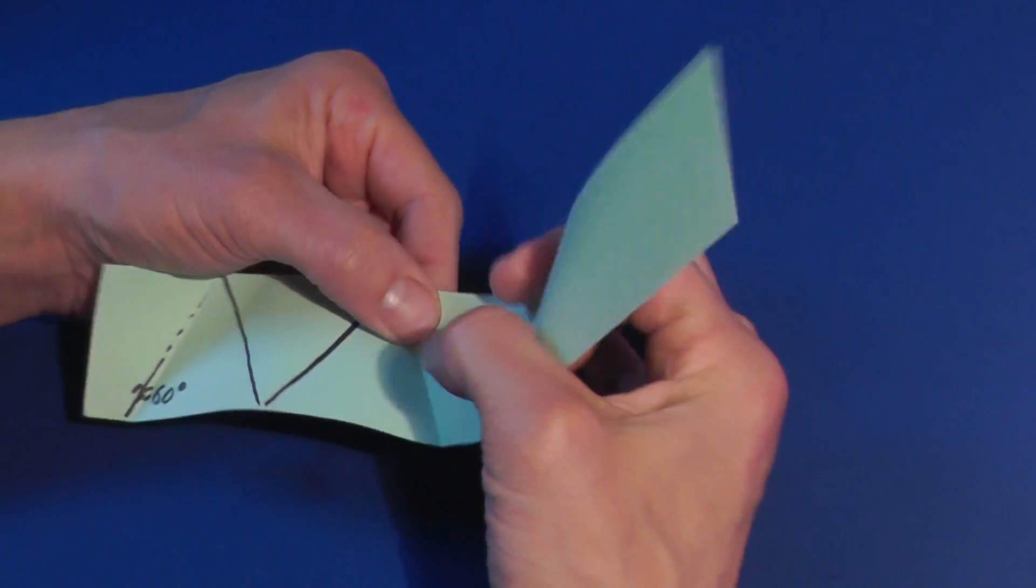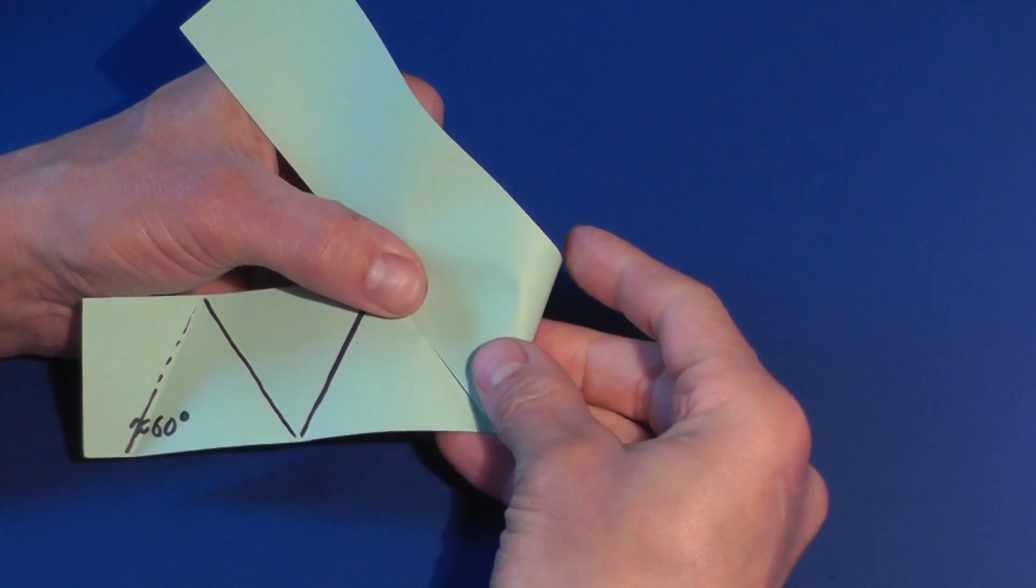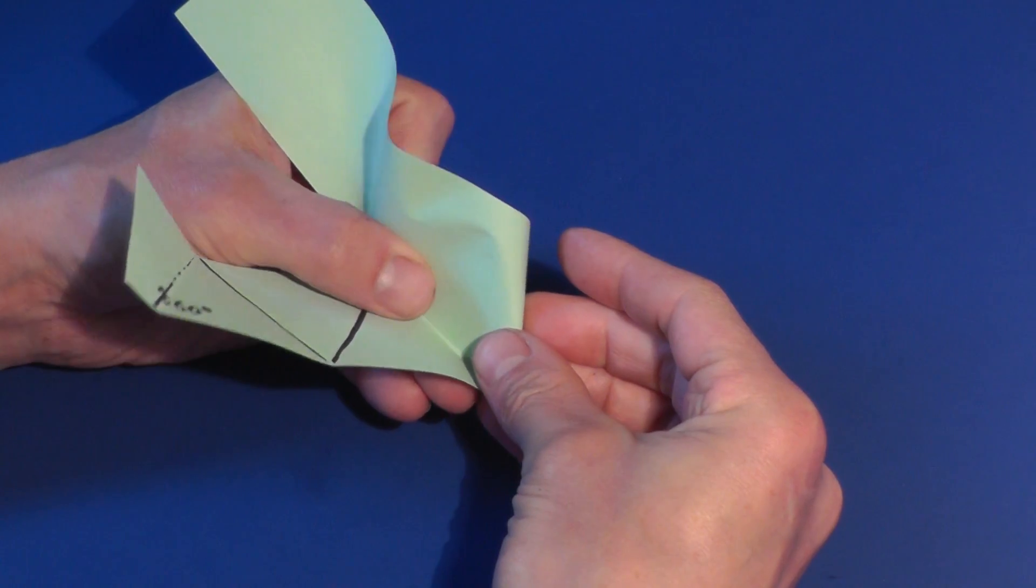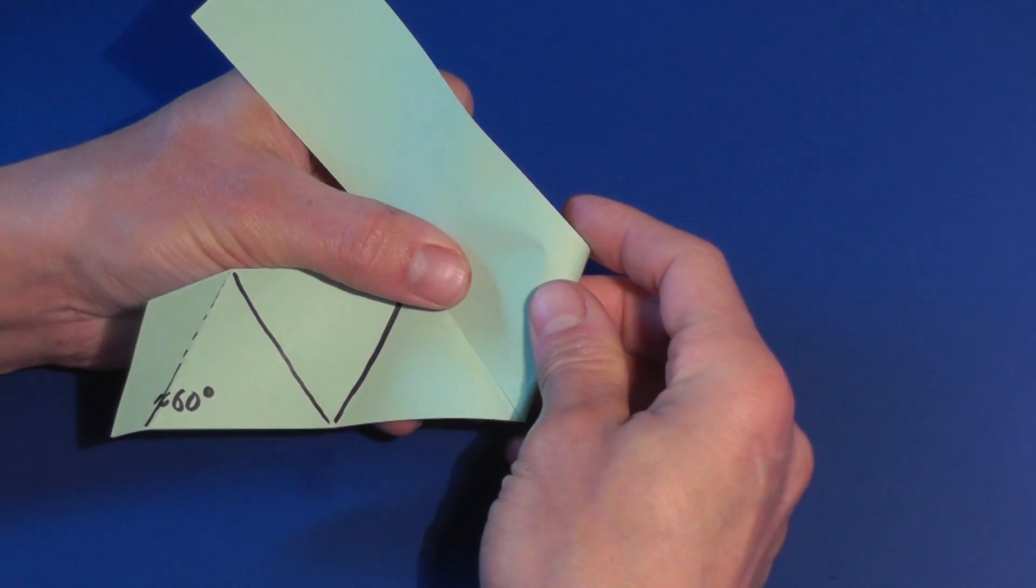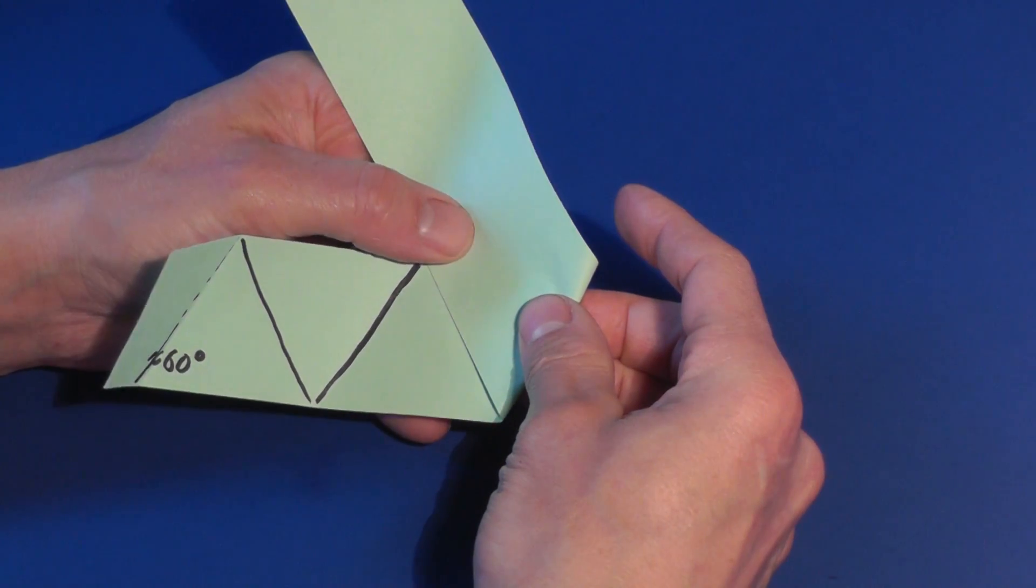If your first fold wasn't precisely 60 degrees, the error is cut in half with every new fold. So the first couple of triangles might not be equilateral, but later triangles quickly approach one.